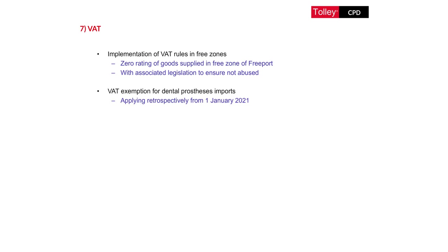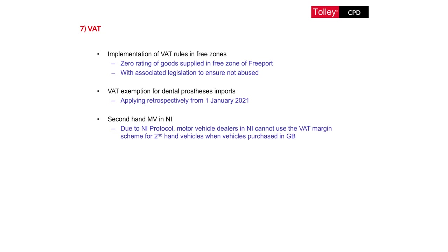There is a new VAT exemption applying retrospectively from the 1st of January 2021 on the importation of dental prosthetics into the UK. There is also an amendment to an anomaly which arises from the Northern Ireland Protocol, such that motor vehicle dealers in Northern Ireland may not use the VAT margin scheme for second-hand vehicles when purchasing vehicles from Great Britain and therefore have to account for VAT on the full selling price. Two measures have been announced to remedy this - one described as an interim measure and the other to enable the introduction of a second-hand motor vehicle export refund scheme.